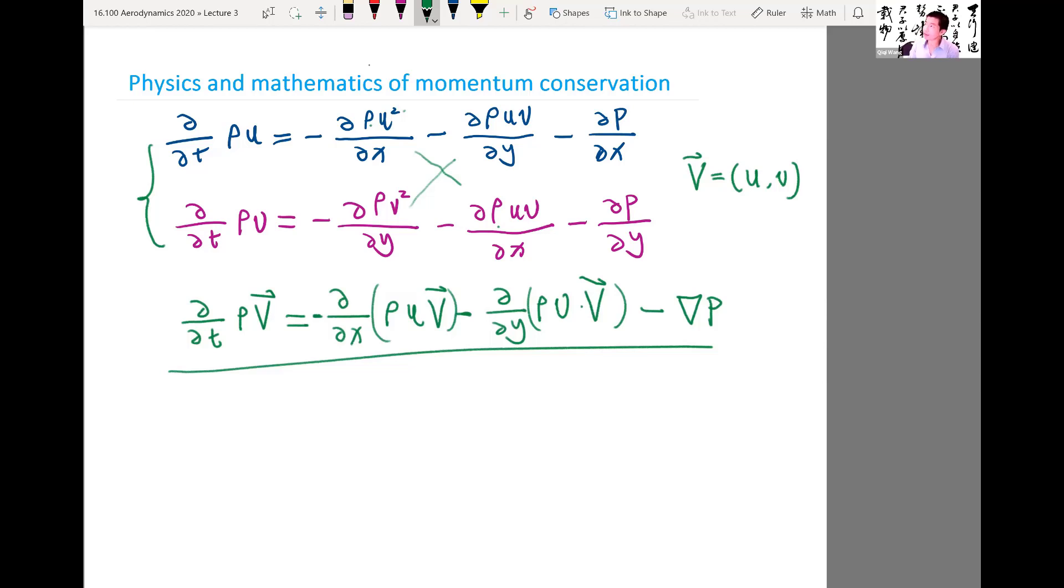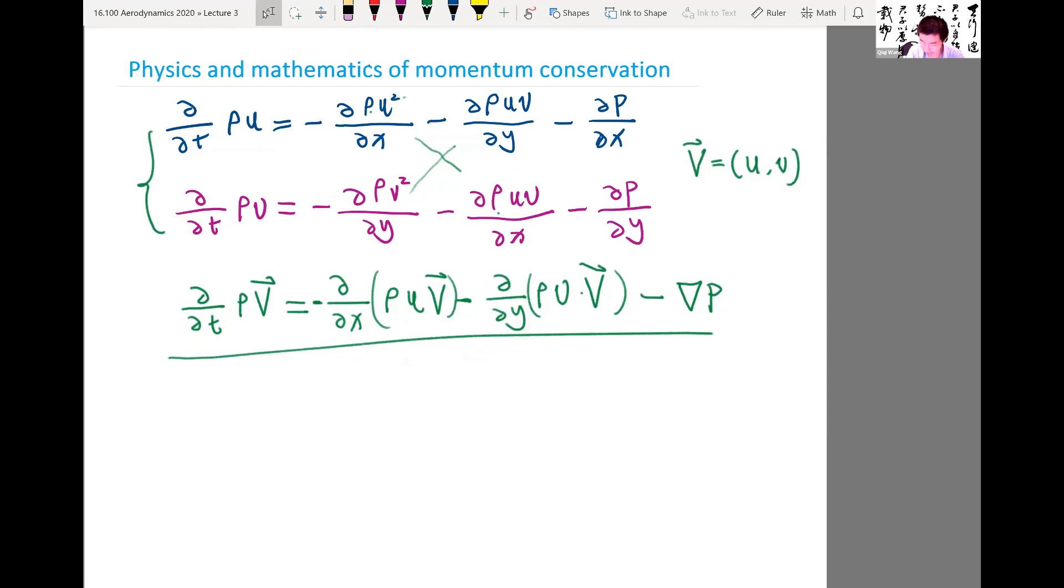Now, here is a very interesting interpretation we can further derive in the context of incompressible flow field. So in the last lecture, we derived the mass conservation equation. For incompressible flow field, what we get is the divergence of velocity equal to zero, right?